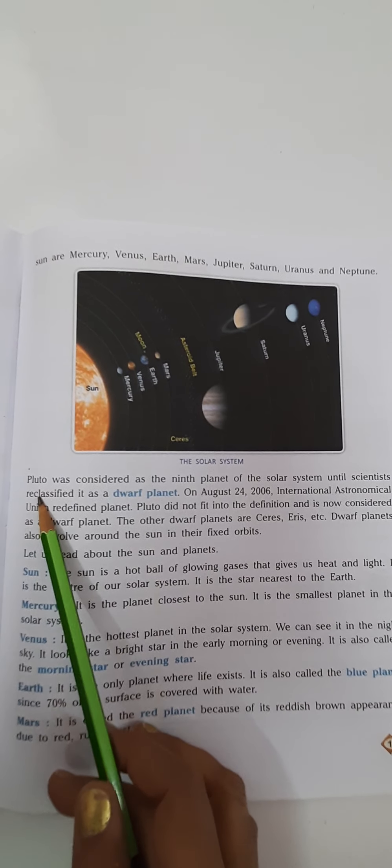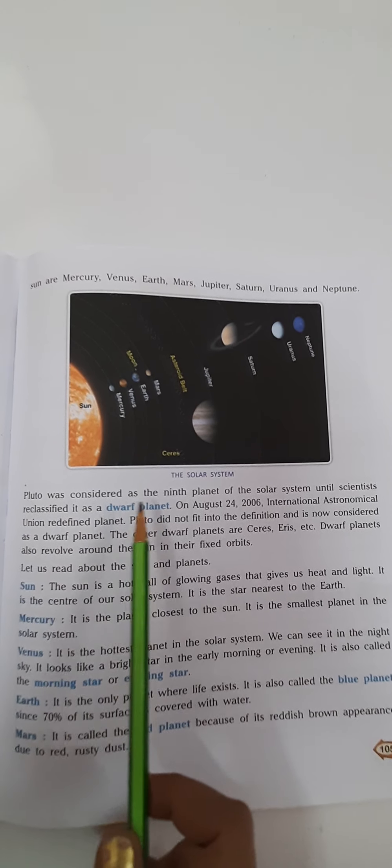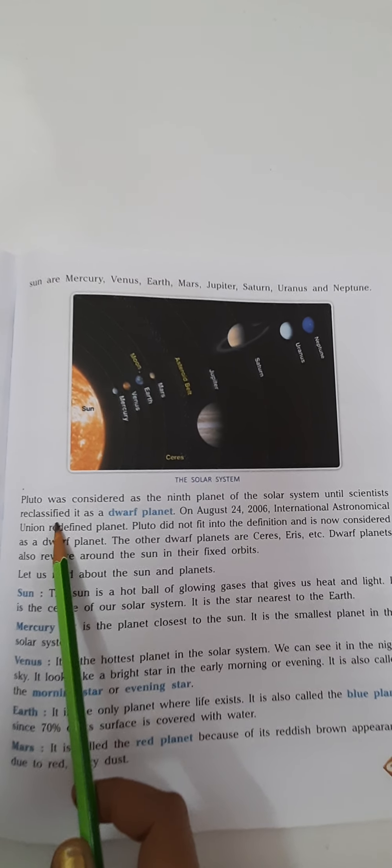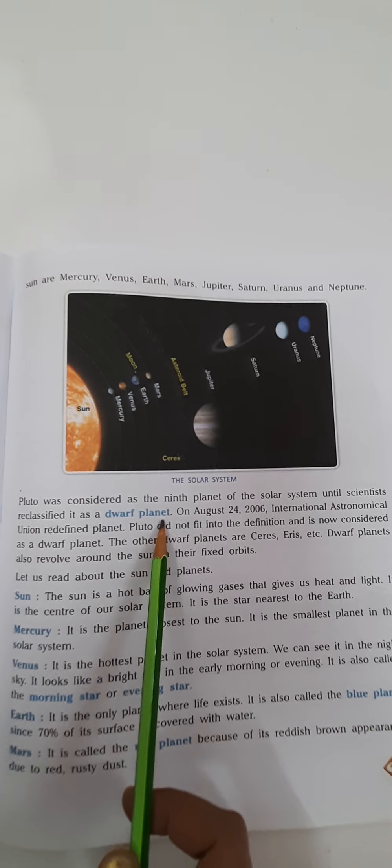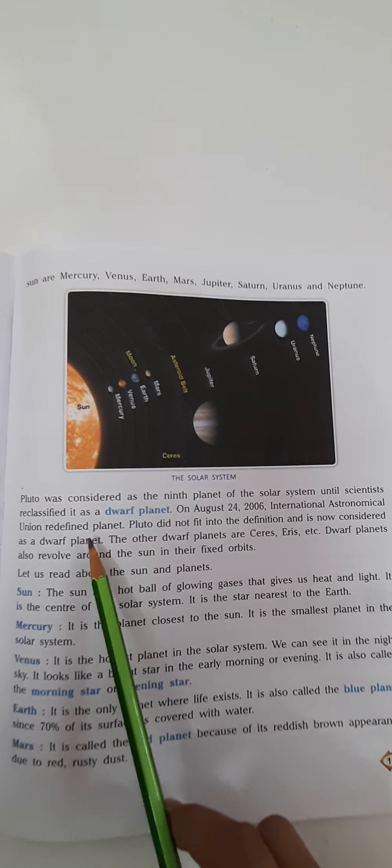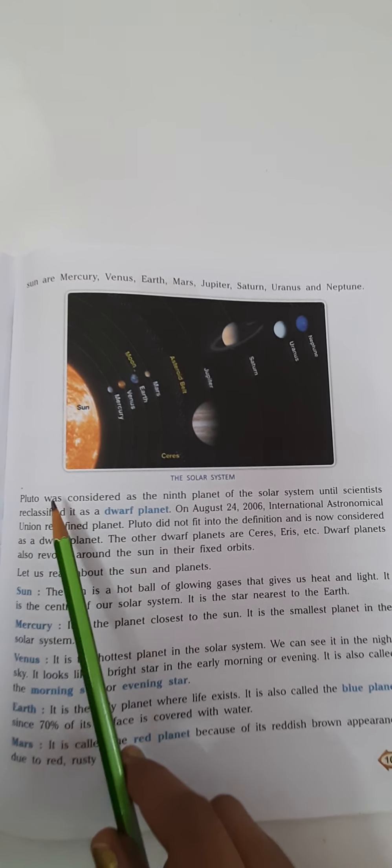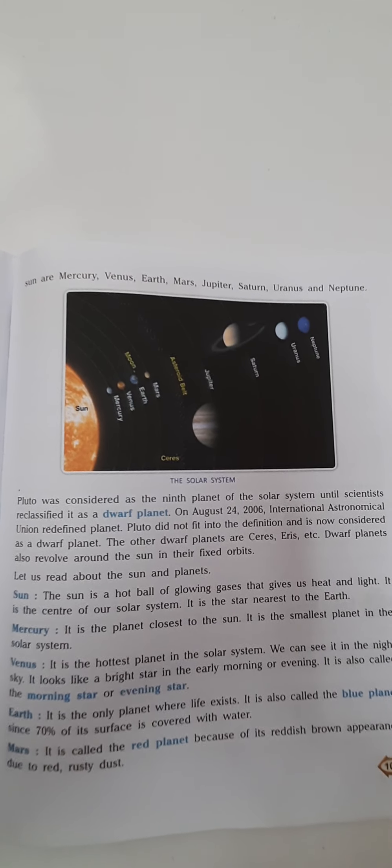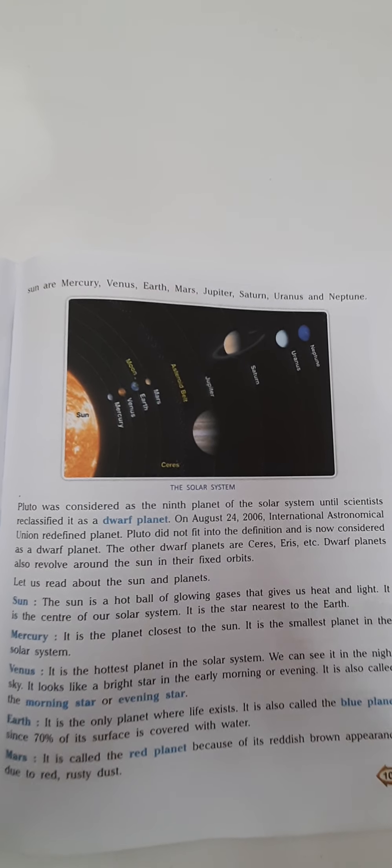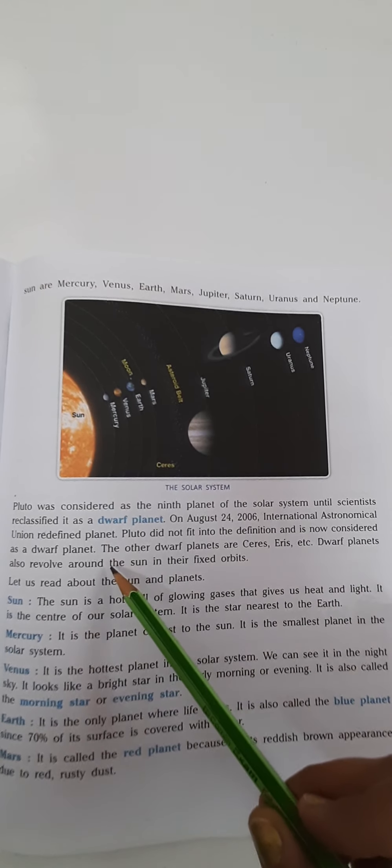Earlier Pluto was considered as the ninth planet. But Pluto was reclassified as a dwarf planet. On August 24, 2006, the International Astronomical Union redefined planets. According to the new definition, Pluto doesn't fit in the definition of planet. So now it is considered as a dwarf planet or very small planet.